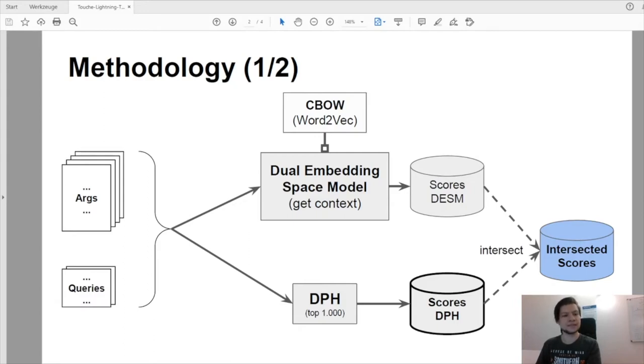The dual embedding space model makes use of a continuous bag of words model. That means these results capture the context of arguments and queries. On the other hand, results yielded by DPH can fail to take relevant context spaces into account.